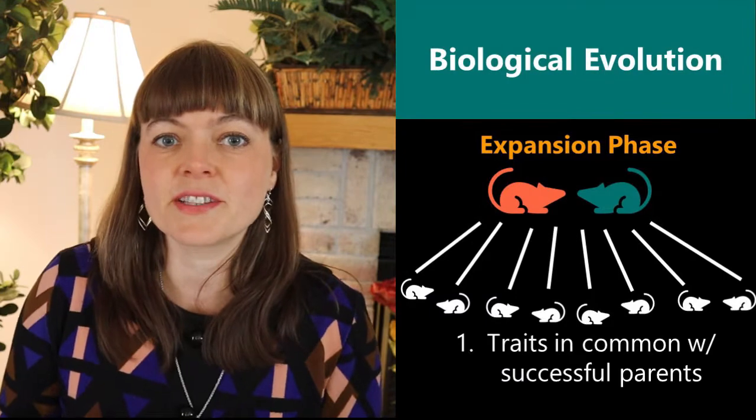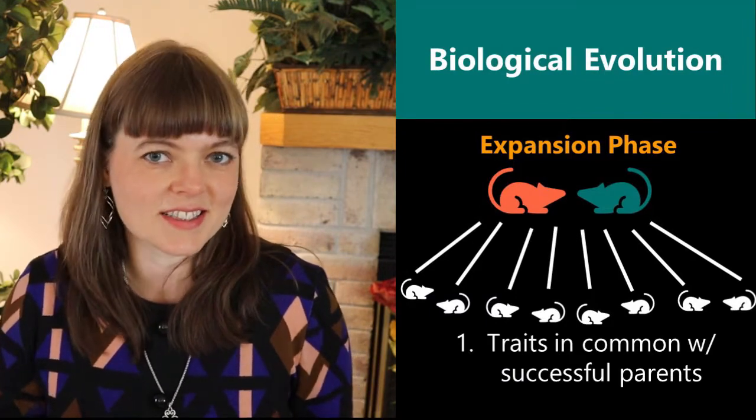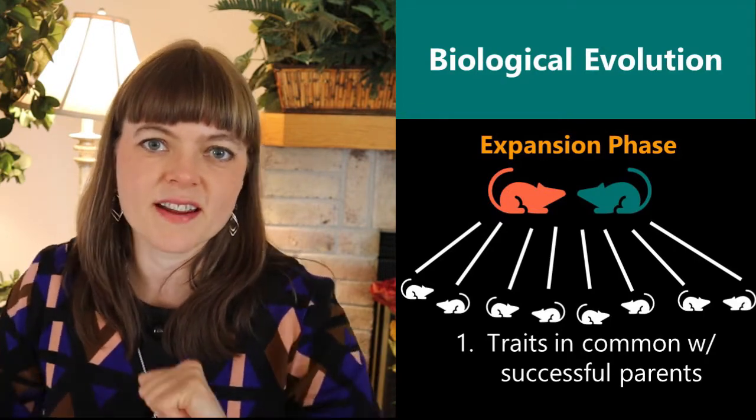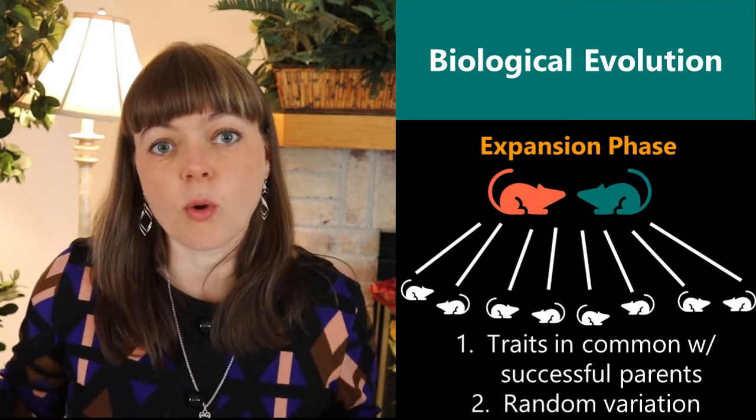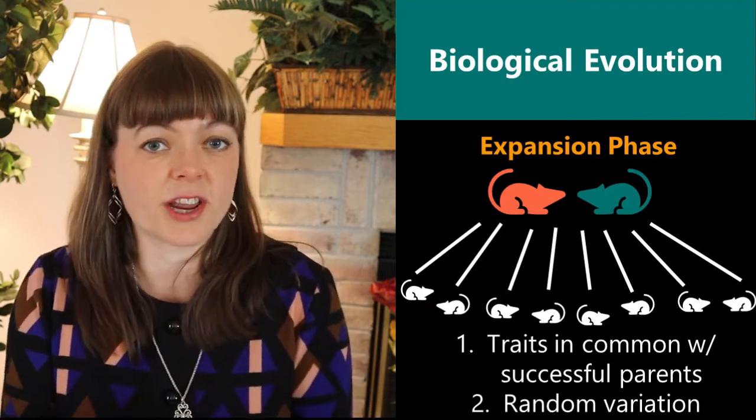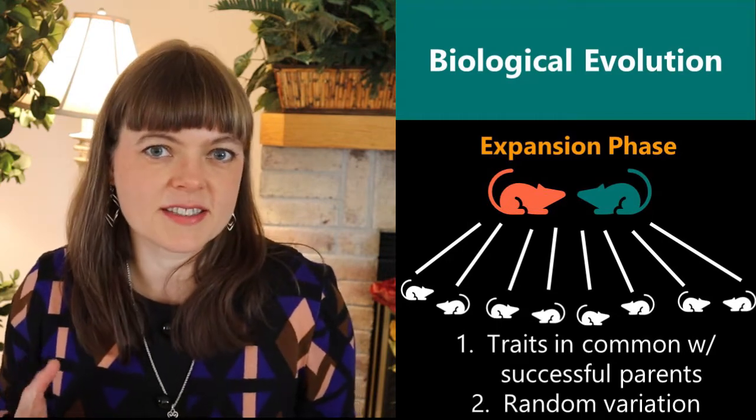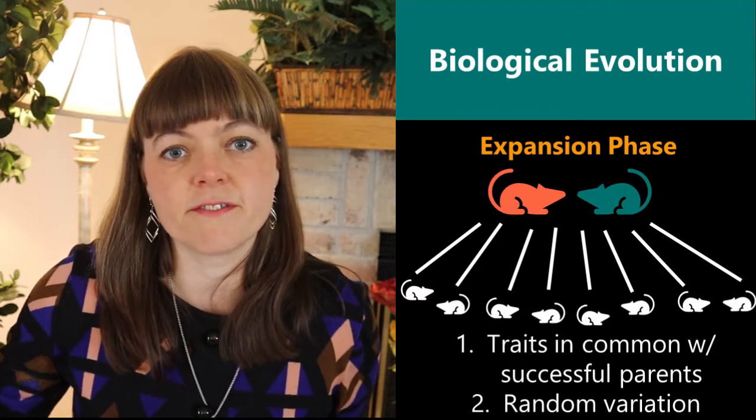One is that the puppies are going to share a lot of traits with their genetically successful parents. They're just going to have plenty of characteristics in common. But the other trait is that there's going to be random variation away from the parents exact traits, such that there's a way for the evolutionary process to discover new things through that random variation.